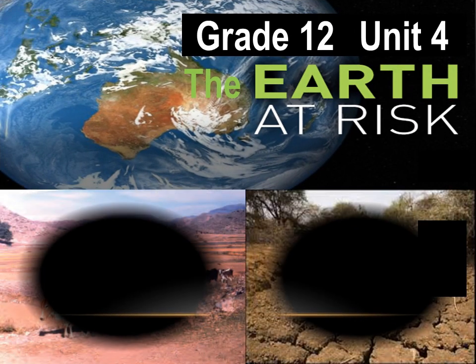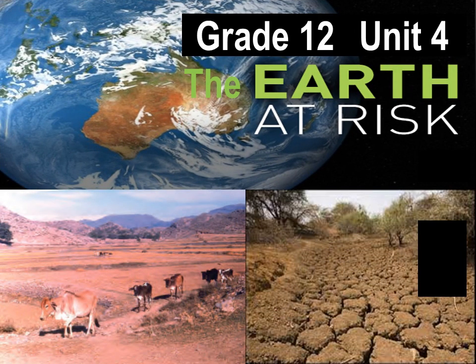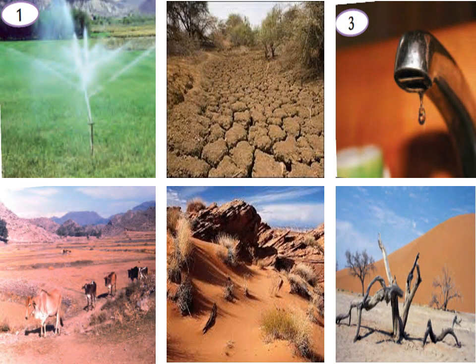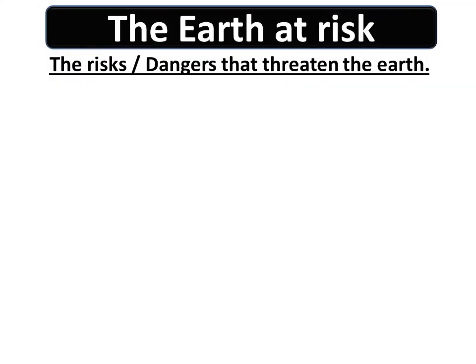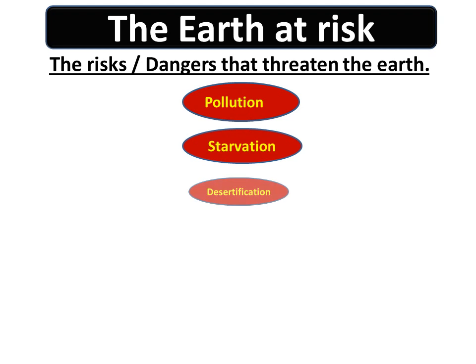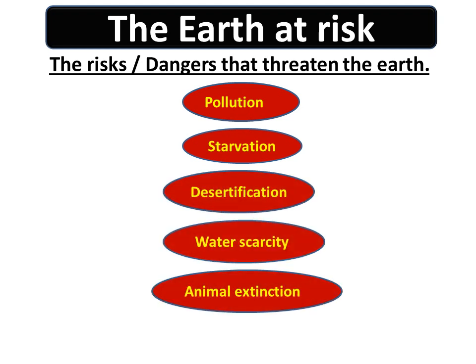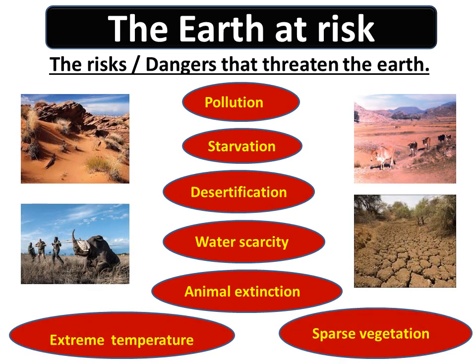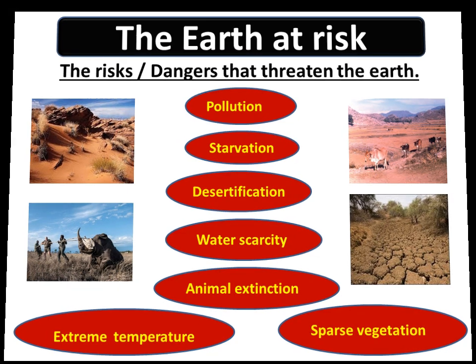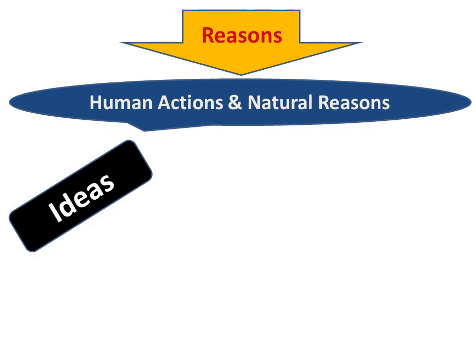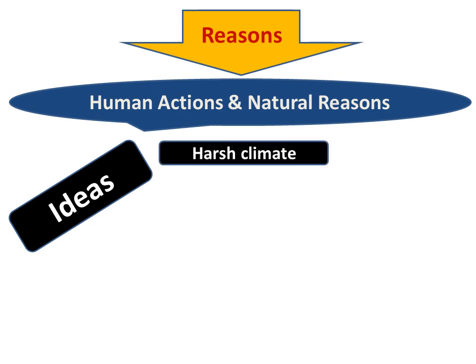Grade 12, Unit 4: The Earth at Risk. The risks and dangers that threaten the earth include pollution, starvation, desertification, water scarcity, animal extinction, extreme temperature, and sparse vegetation.